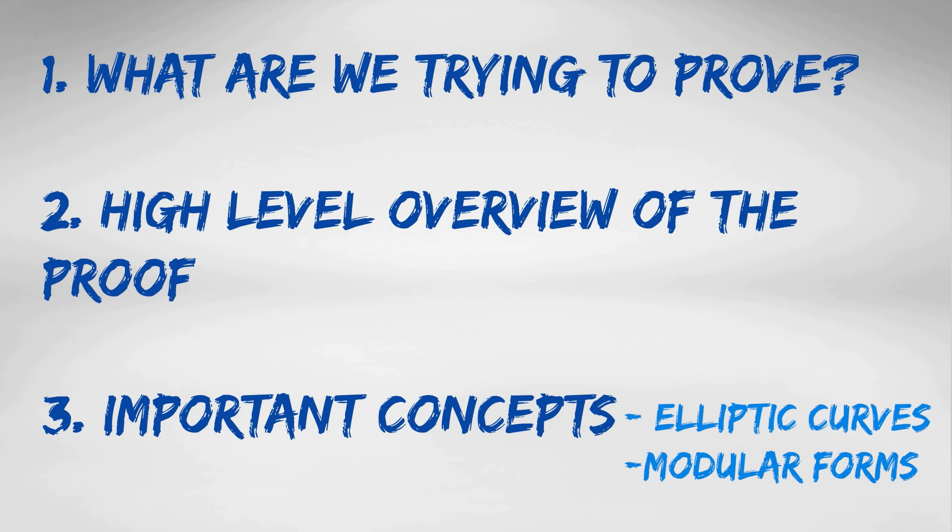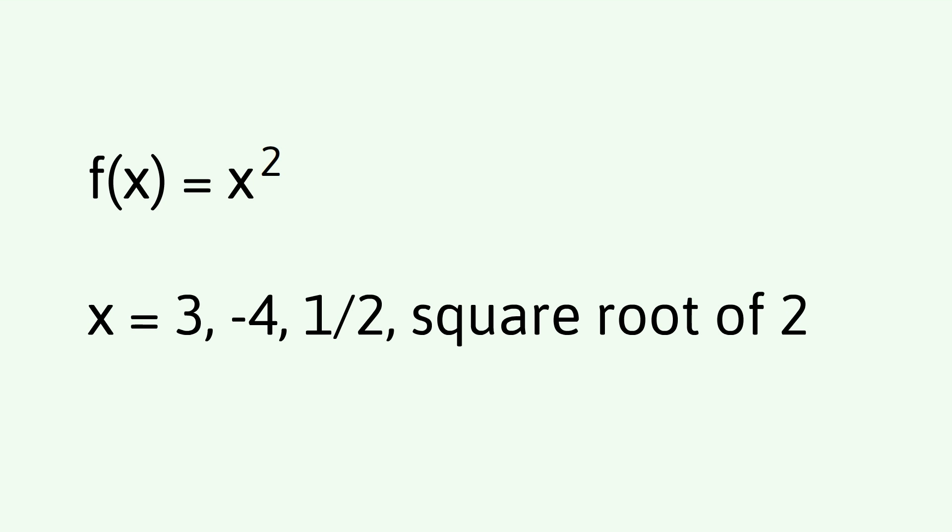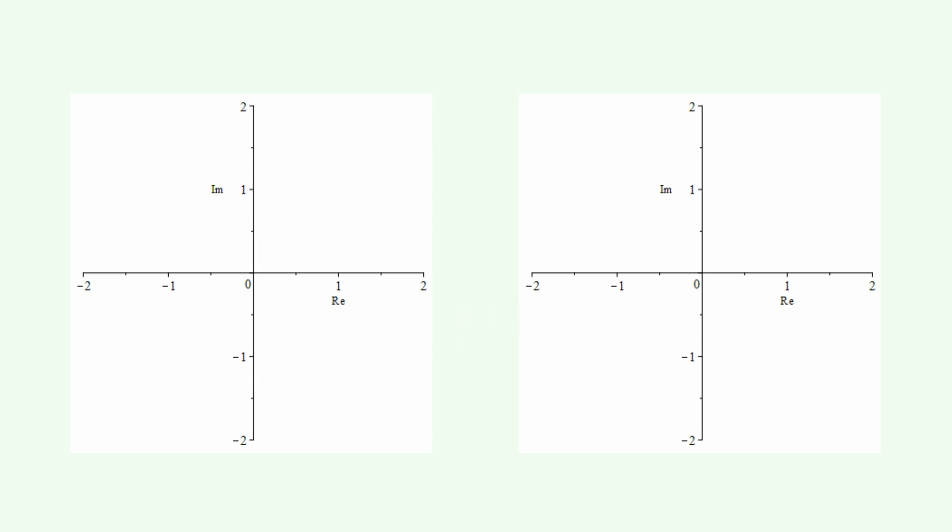So, let's move on to the second important concept. And that's the idea of modular forms. So, many people, when I mention the word function, will think of something like f(x) equals x squared. And here they're thinking of x being maybe a counting number, say 3 or an integer, say minus 4, or a fraction, say a half, or an irrational, say the square root of 2.